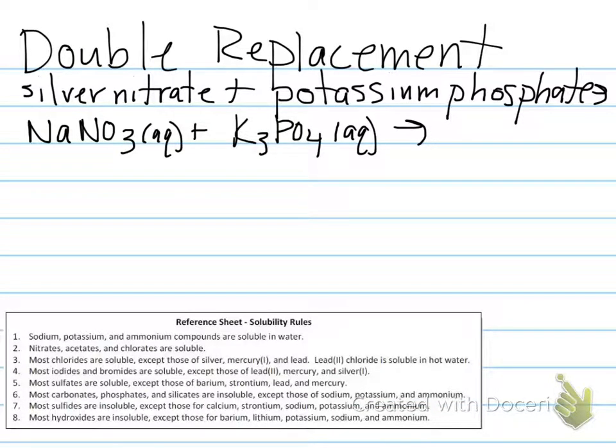So our last set, double replacement, we have to take a look at our solubility rules. You guys have a matrix, you'll be able to check. I have a reference sheet of solubility rules that applies the similar pattern that's in that matrix. Remember that we have to actually attempt the trade to see what the products would be, and then determine if there's a possibility of a solid product.